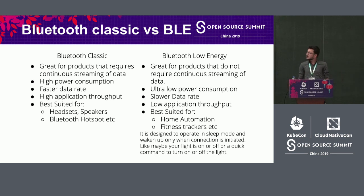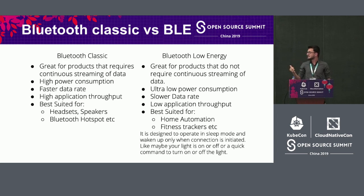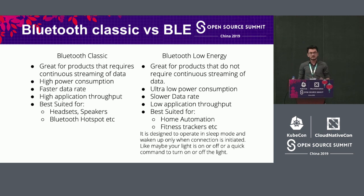Bluetooth Low Energy, on the other hand, is great for products that don't require continuous data streaming — like a smart bulb that just needs to receive an on or off command. In that case you don't need continuous transmission, so we prefer BLE. It has ultra-low power consumption and can operate at a slow data rate. The beauty of BLE is that it is designed to operate in sleep mode and wake up only when a connection is initiated. That's why fitness trackers can run for days and days on a single charge. This makes it best suited for home automation, fitness trackers, and many other IoT devices.